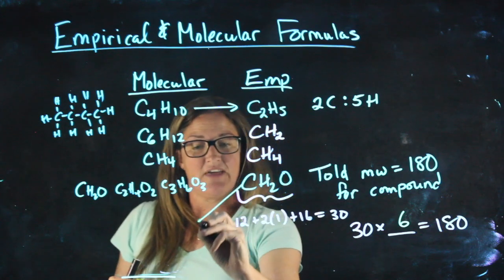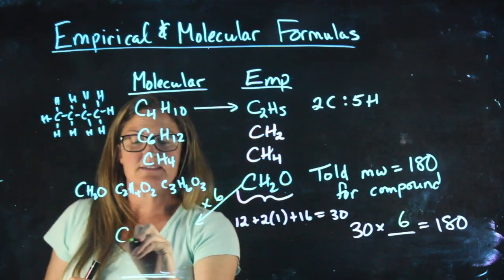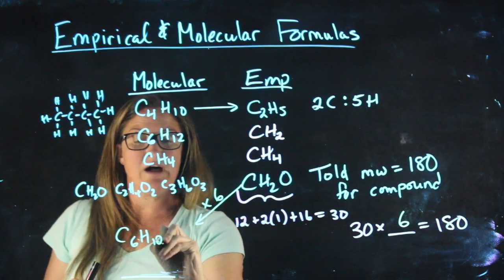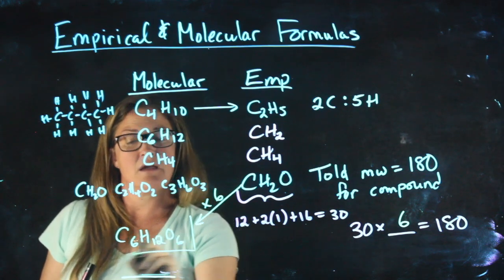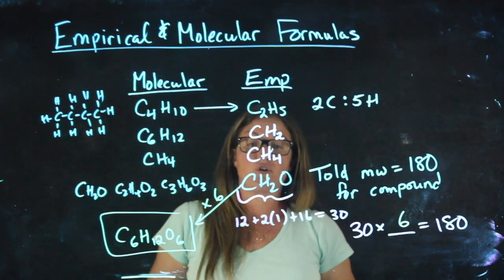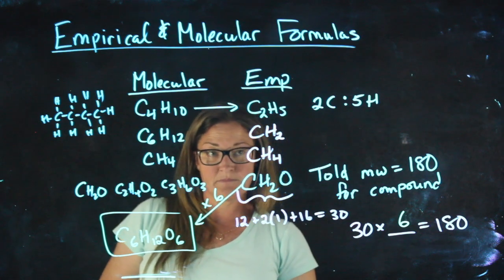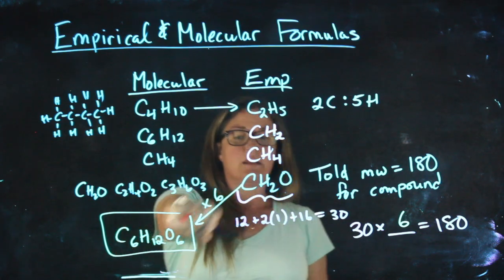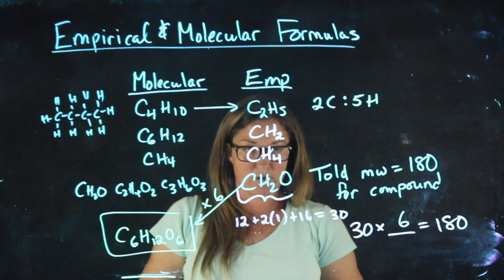So if I took this and multiplied by 6, giving me C6H12O6, I now have the correct molecular formula that has the correct molecular weight and reduces to my empirical formula.